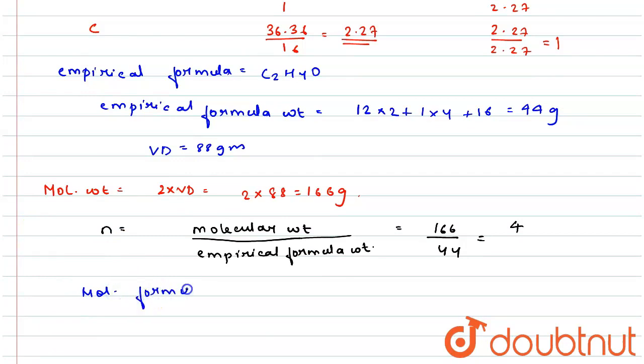So now the molecular formula is equal to n into empirical formula. So n is 4 and empirical formula is C2H4O, so this is equal to C8H16O4.